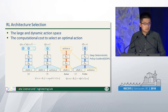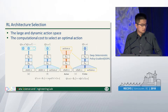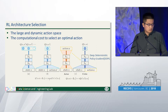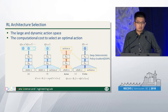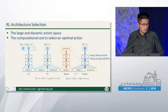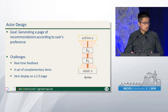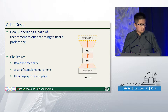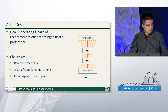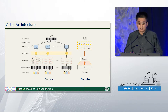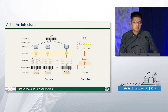In this paper, we use the deep deterministic policy gradient method in which the actor aims to generate a page of recommendations according to user's preference and will generate a higher long-term reward. The goal of the actor is to generate a page of recommendations according to user's preference, and we need to tackle the three aforementioned challenges. Here is the overview of the actor architecture where we use an encoder-decoder framework.